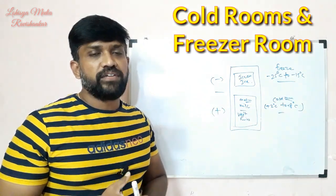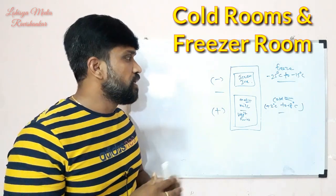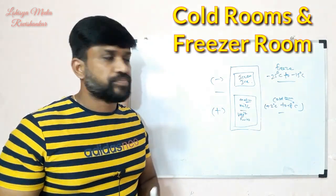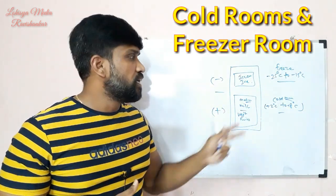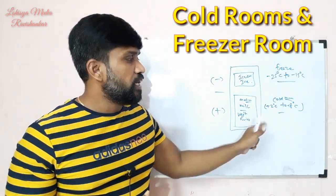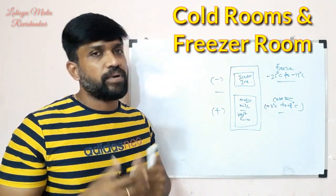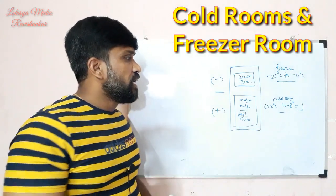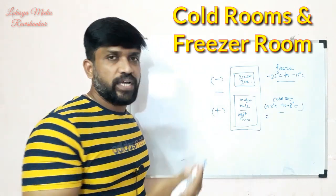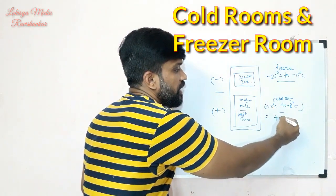Temperature must be maintained in cold rooms and freezer rooms. If there is a power outage, the atmospheric temperature will increase. The temperature inside the room will rise. For food products, the maximum allowable temperature rise is up to 10 degrees Celsius.